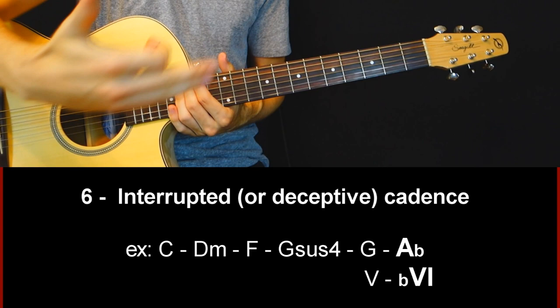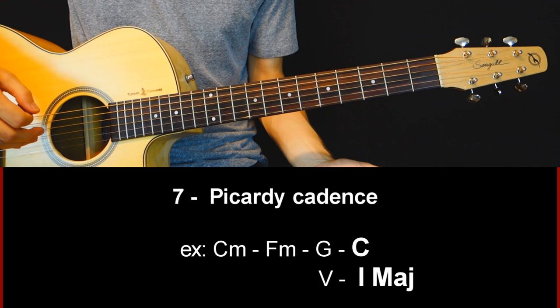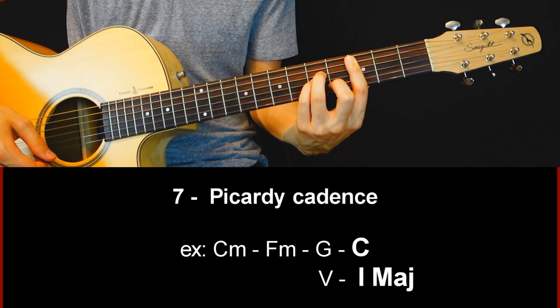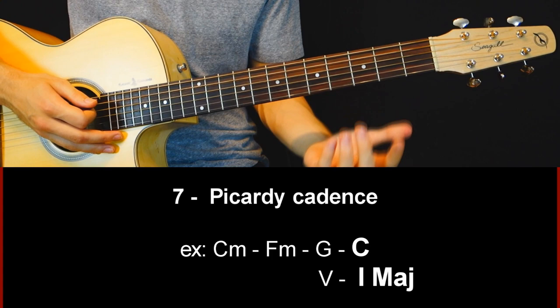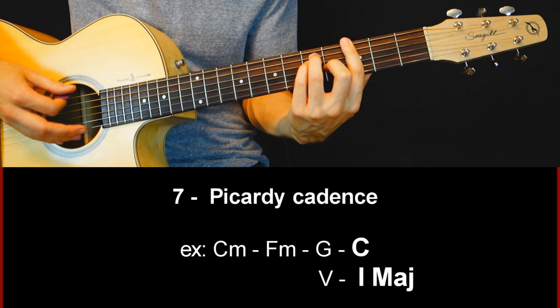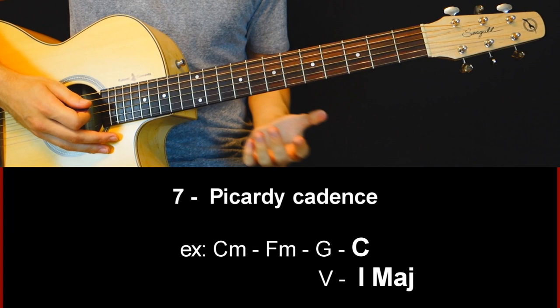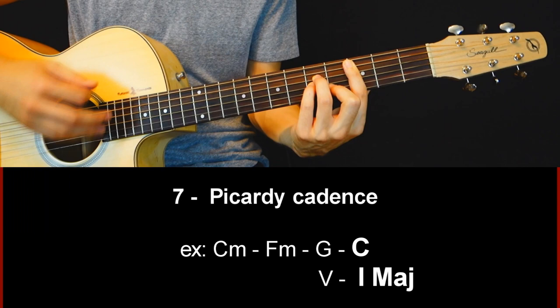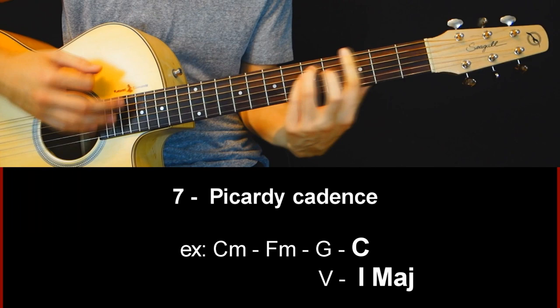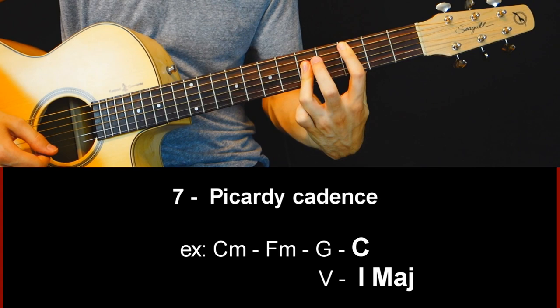The seventh type of cadence is the Picardy cadence. We are going to play in a minor scale — C minor — and most of the time we use a G major because we still want the tension and resolution. In a regular harmonization it's supposed to be a G minor, but you don't have the same attraction. With the Picardy cadence, we play in minor but resolve to the root chord in major instead. If you want to learn more about Picardy thirds, I have a lesson on that.